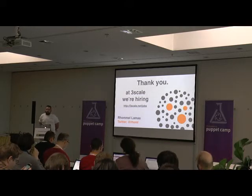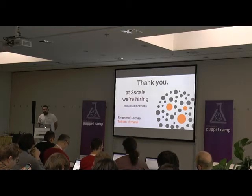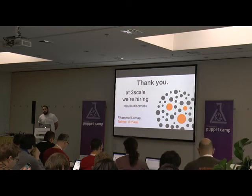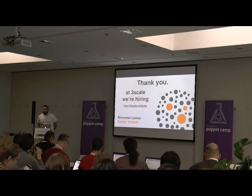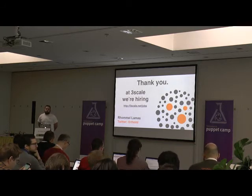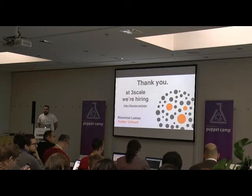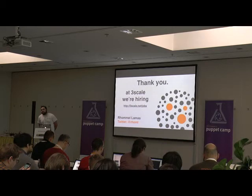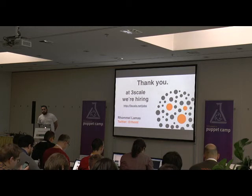We are doing code review in GitHub using pull requests, and the whole team is involved in the code review of all the Puppet models and Puppet code. The idea is that unless it fits a core module, everybody can push and merge all the pull requests to the master branch. If it's a core module, it can only be merged by the operations team. This way we ensure that nothing breaks.